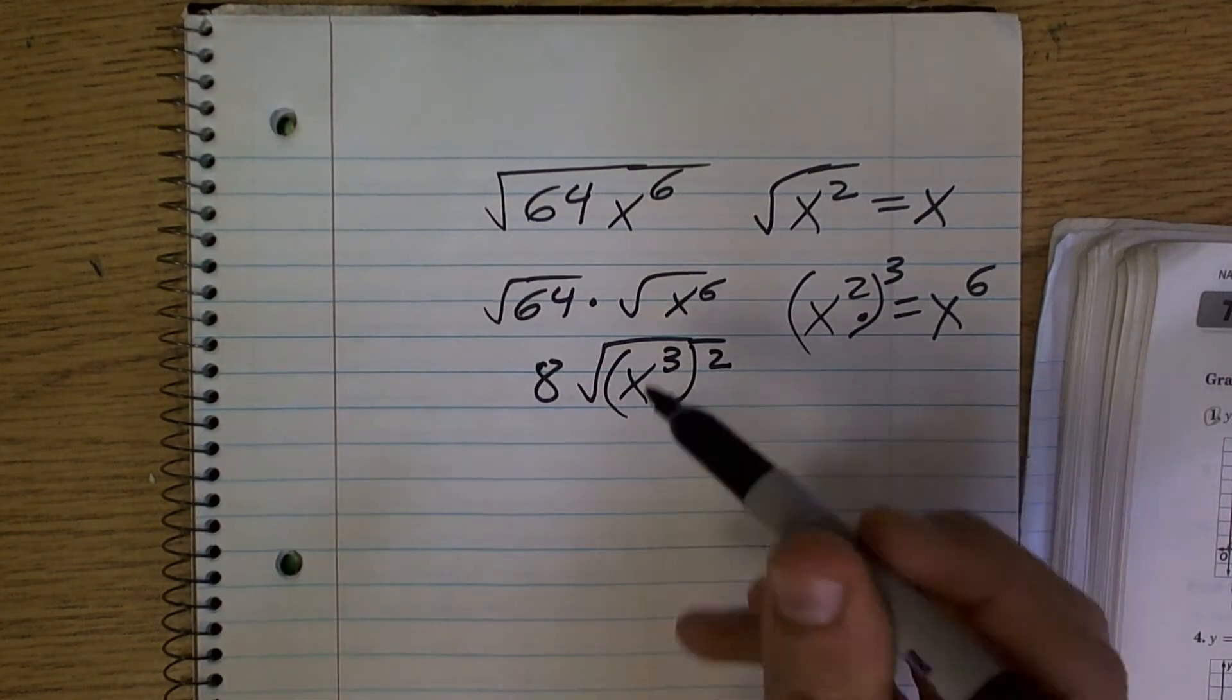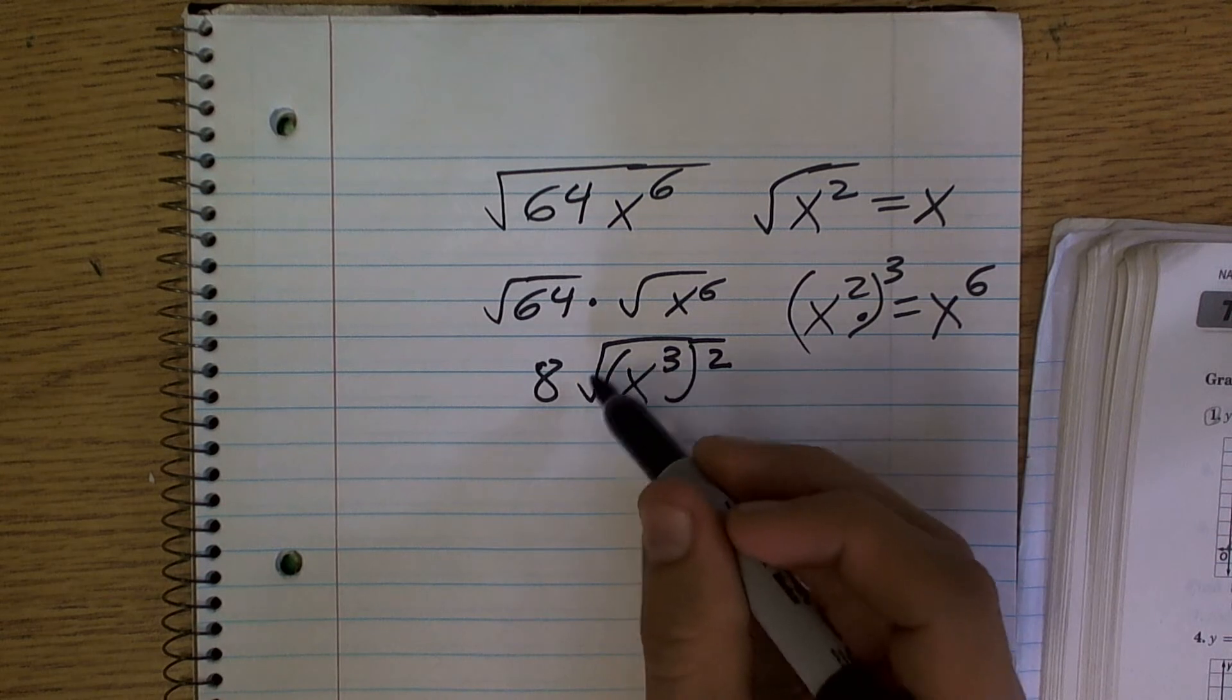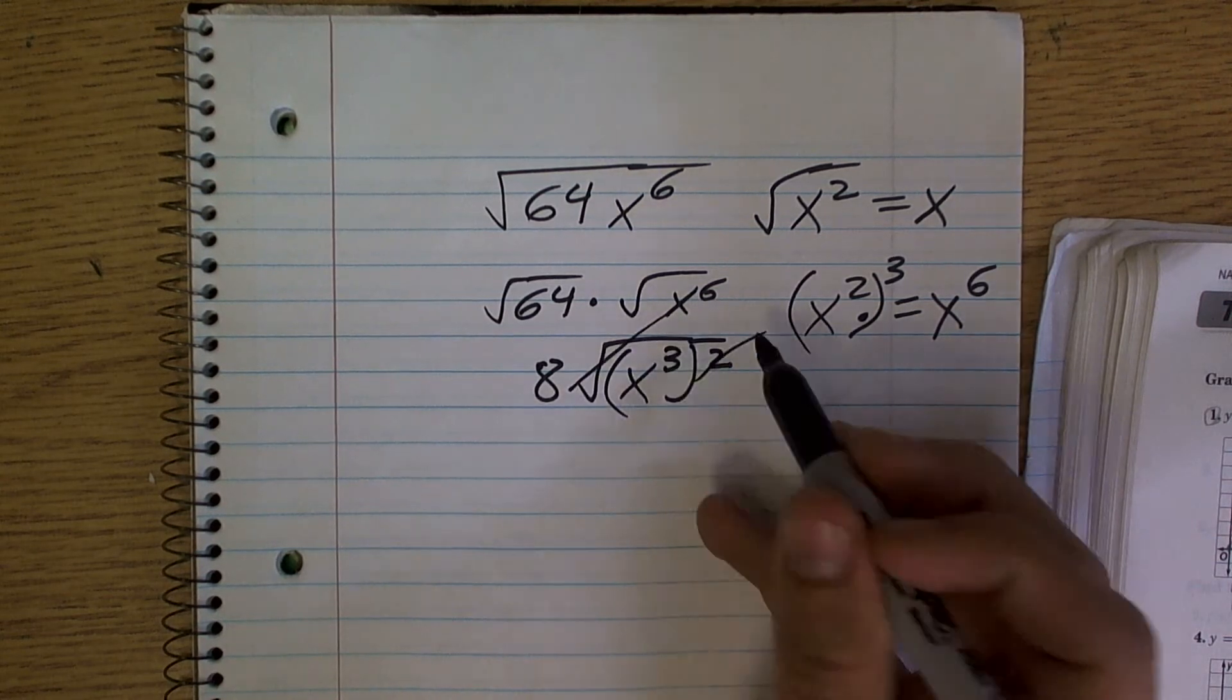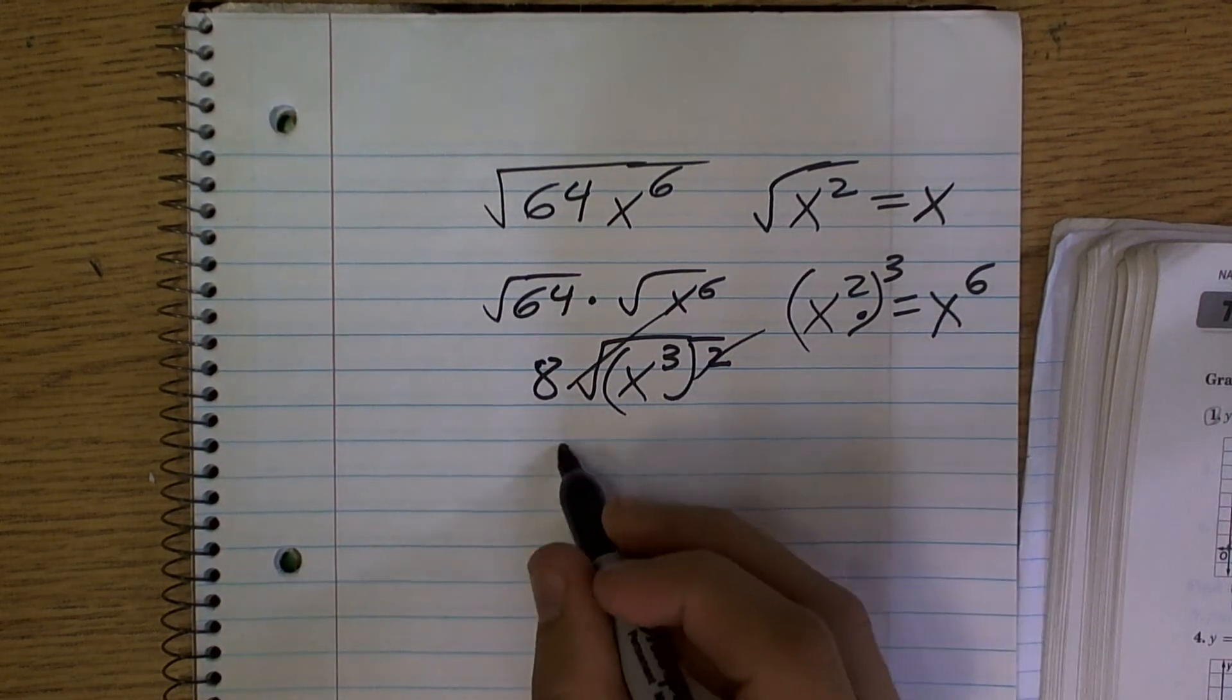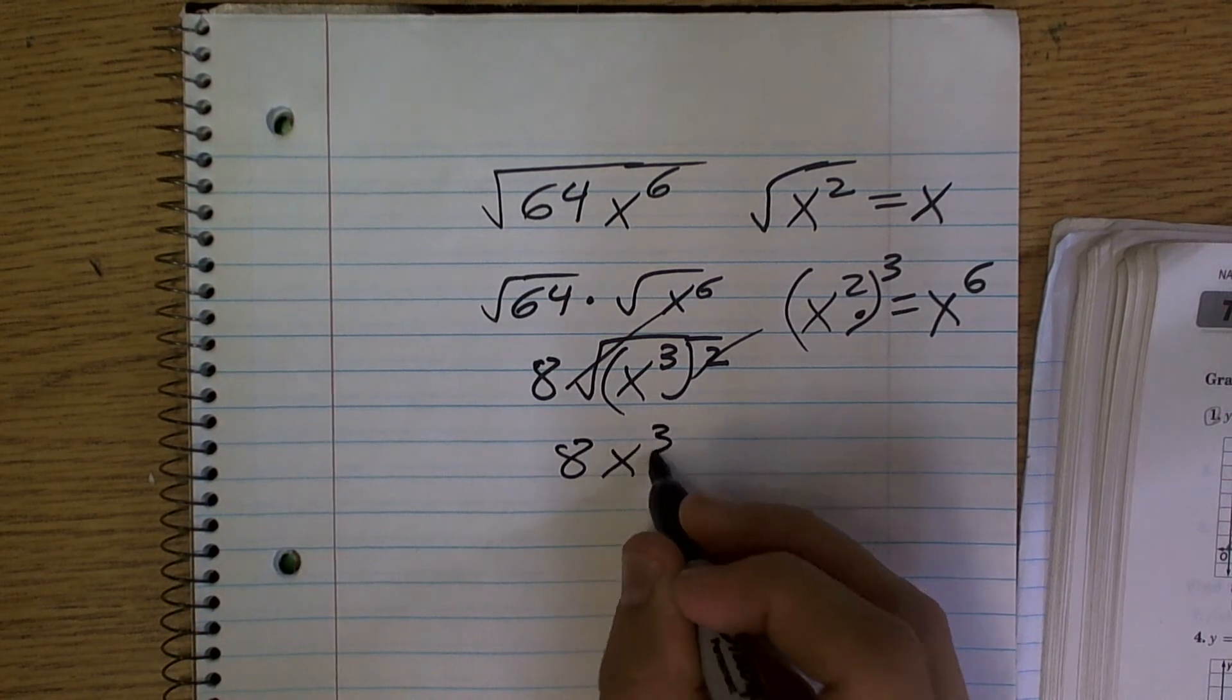then what happens is, like I said, these square roots are going to cancel out. So therefore, I'm just left with 8 x cubed.